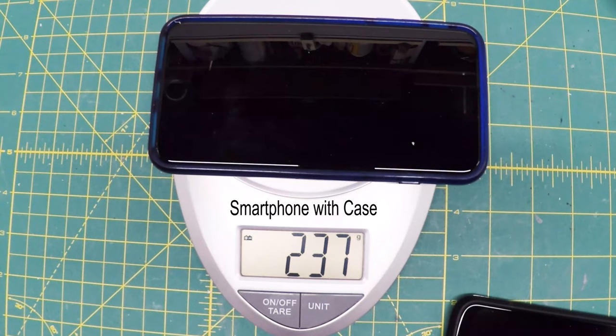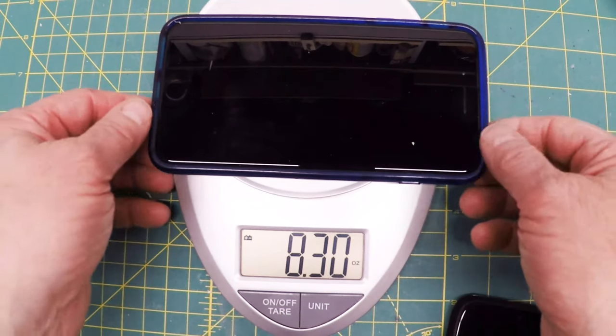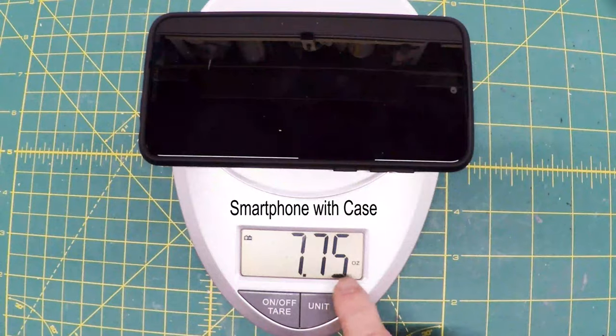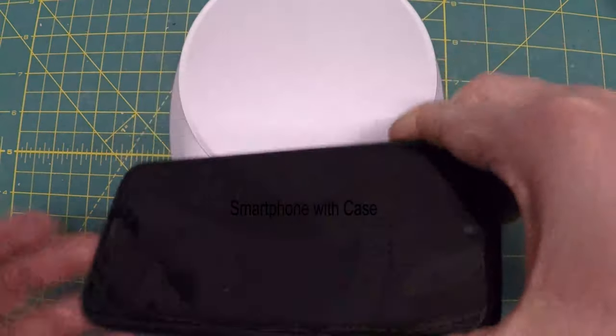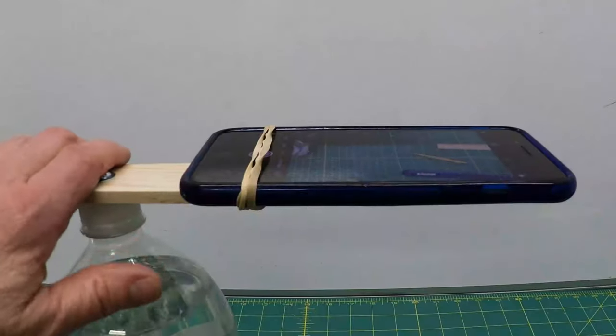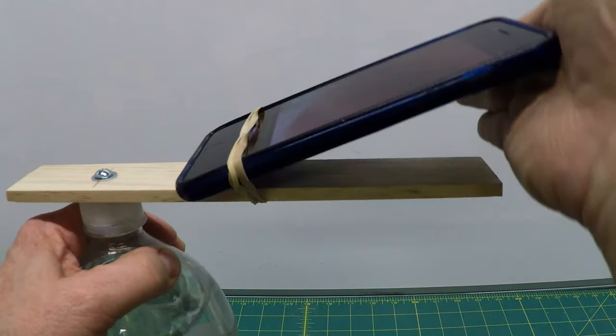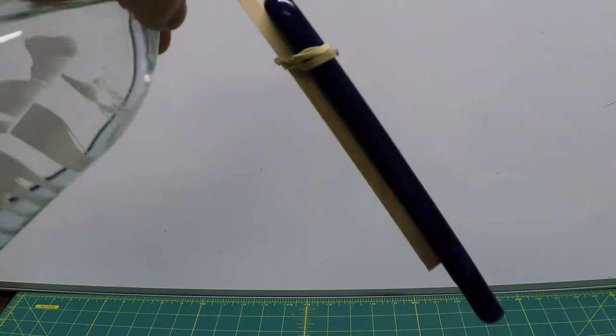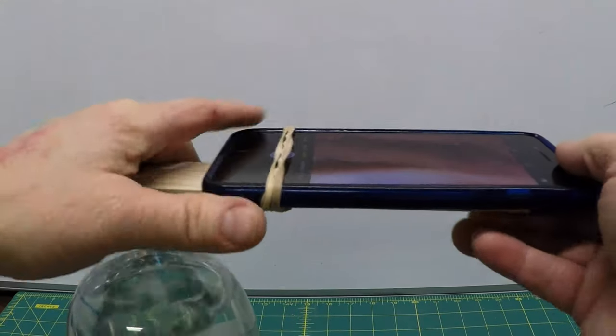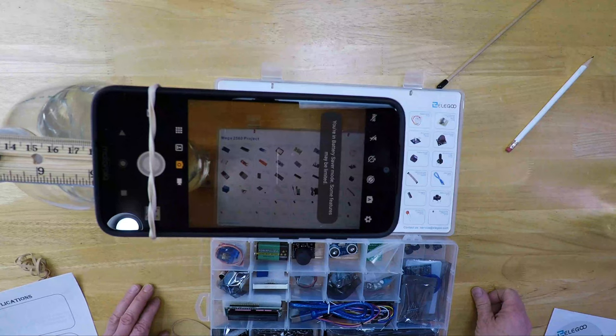Seven and three-quarters ounces, 220 grams for this Android phone. So all you do is put a couple rubber bands on there and that's gonna hold your phone quite nicely so it will be stable when you start shooting.